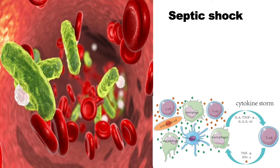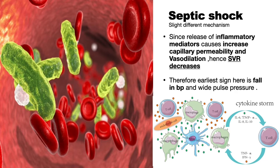Septic shock follows a slightly different mechanism due to the release of inflammatory mediators, which cause increased capillary permeability and vasodilation. This causes a decrease in SVR — systemic vascular resistance. Hence one must look for a fall in blood pressure along with wide pulse pressure to assess the patient.